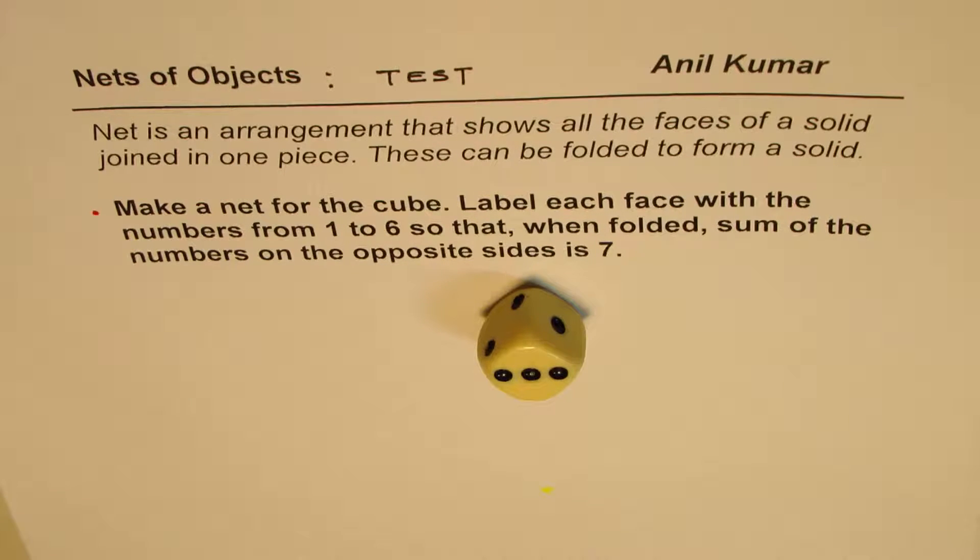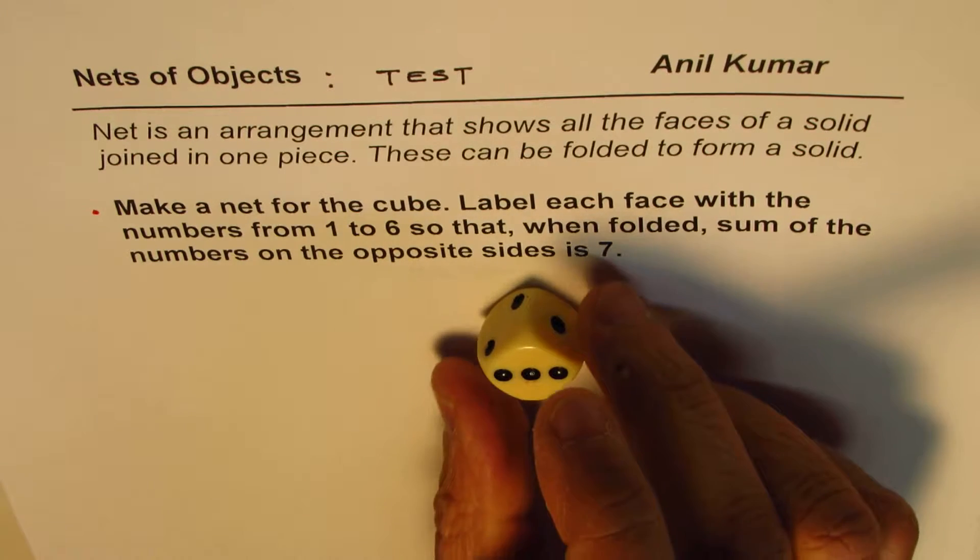So you need to make a net for the cube and label it so that when you fold it you get 7 by adding the opposite sides. You can pause the video, answer the question, and then look into my suggestions. You could have different answers.